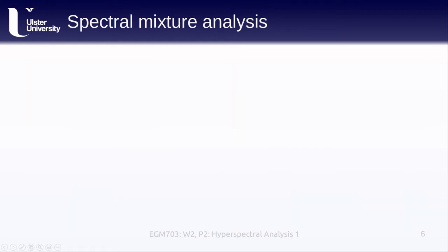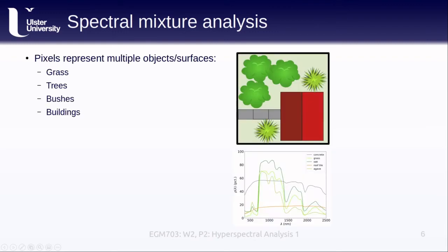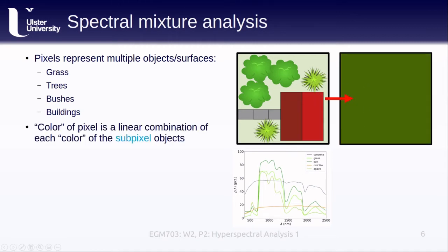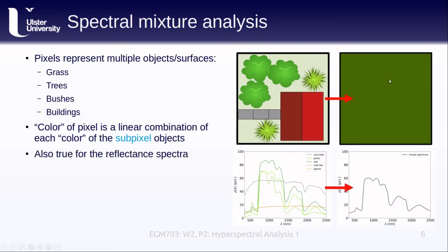Remember that for most satellite images that we're going to be working with, each pixel represents multiple objects or surfaces that are smaller than the spatial resolution of our sensor. In the example here, our pixel contains grass, a few trees, some bushes, a sidewalk, and a house with a red tile roof. The color of the pixel is a linear combination of the color or reflectance of each of these sub-pixel objects or surfaces. For example, if we were to take each of these colors and blend them all together, we'd probably end up with something that looks fairly green, like this. The same is true for the reflectance spectrum of the pixel. It's a linear combination of each of the individual spectra that we see here.